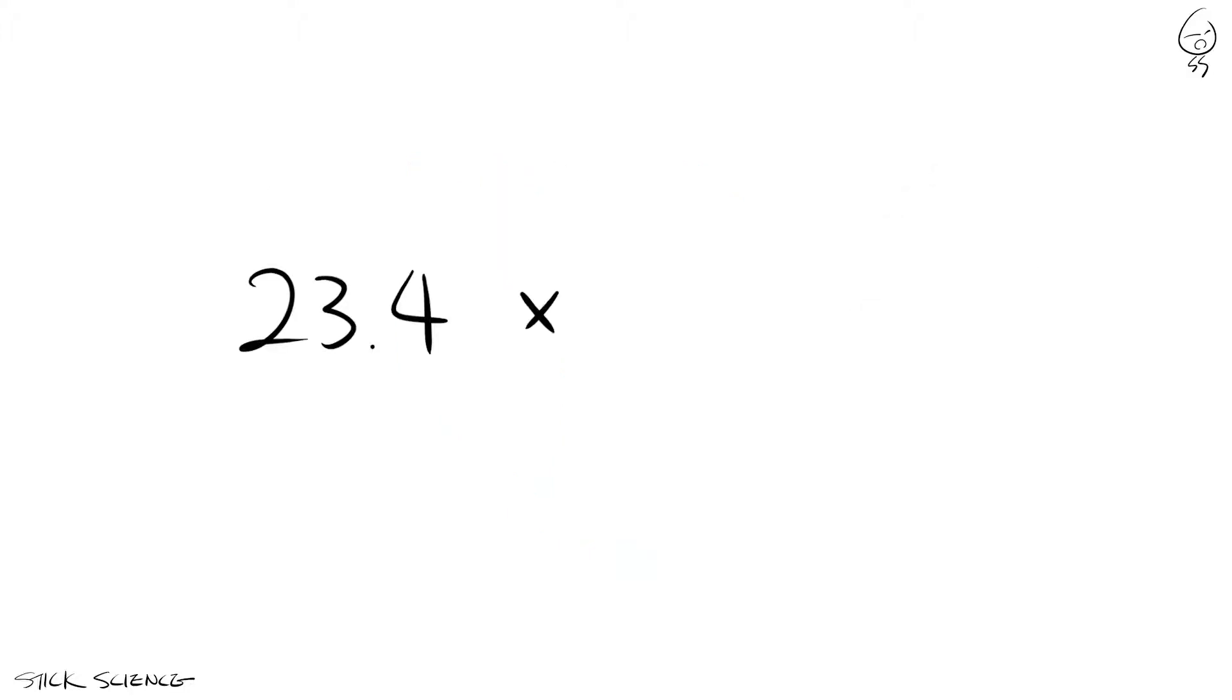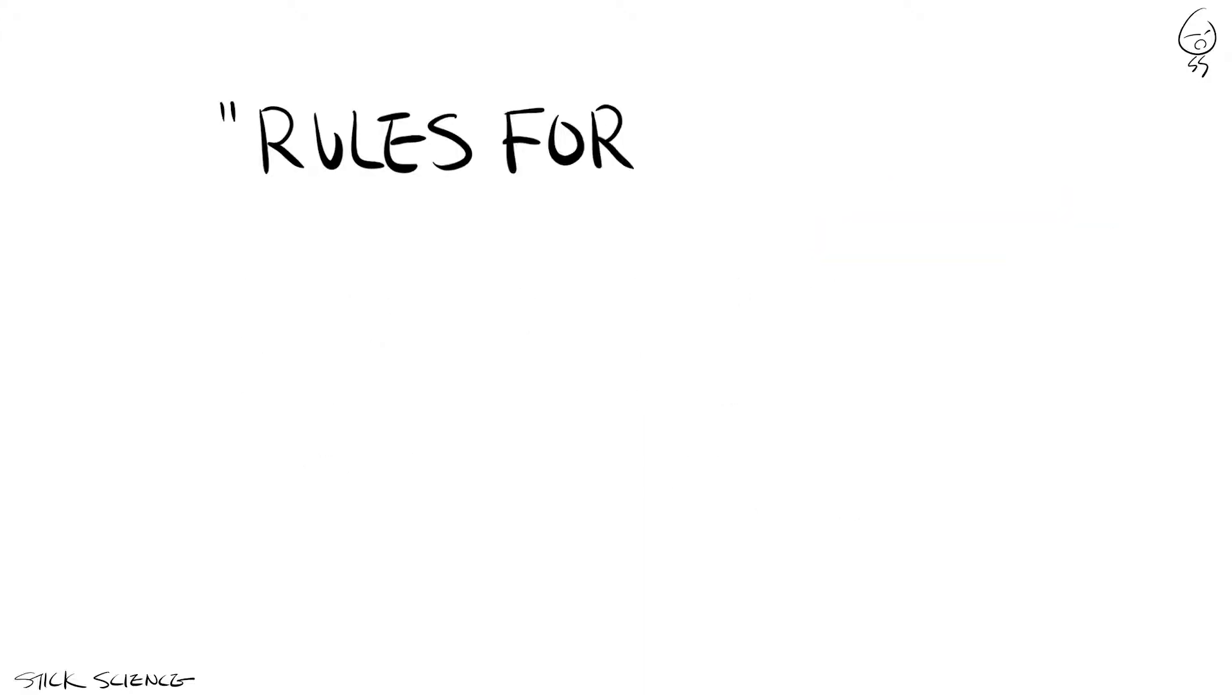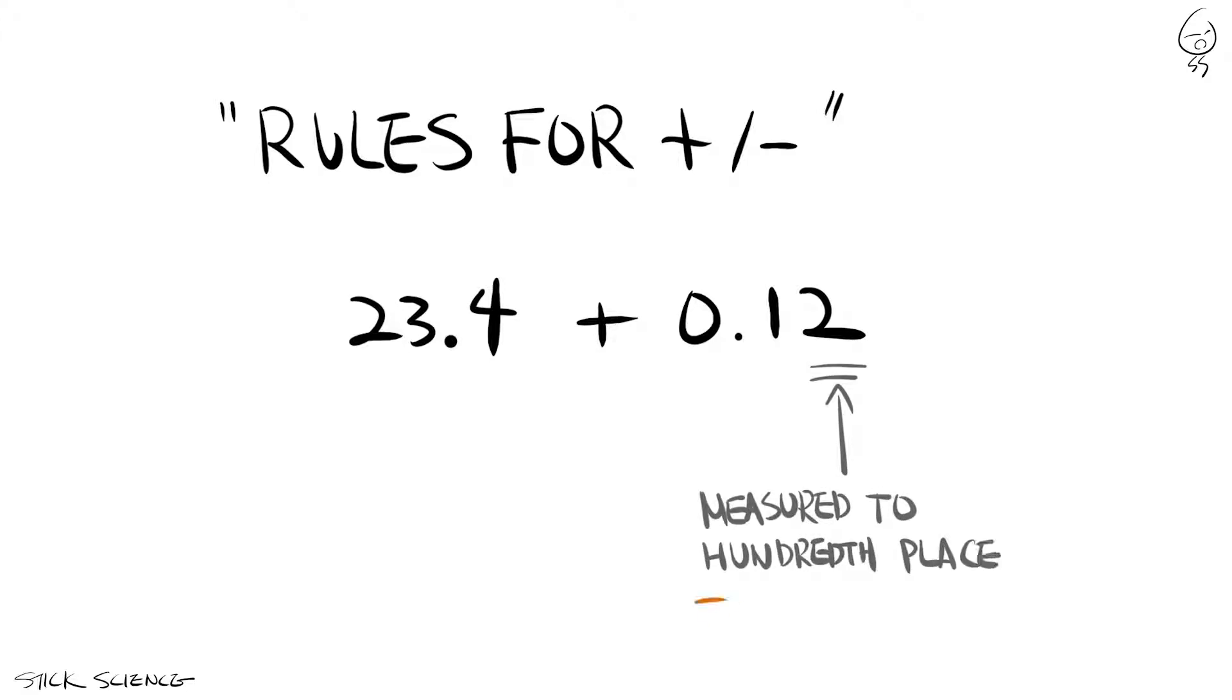Let's say we're multiplying 23.4 and 0.12. The first number has three significant figures and the second number has two significant figures. Since the number of significant figures is a representation of the precision of the measurement, the number with the least amount of significant figures is the weaker link. This is different from the rules in addition and subtraction where we look at the placement of the final significant figure to find the weakest link.